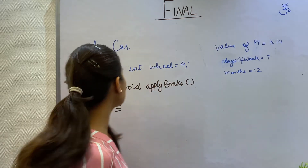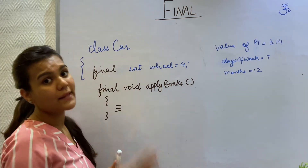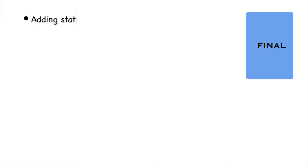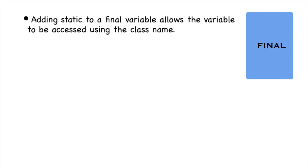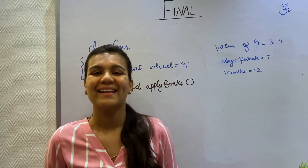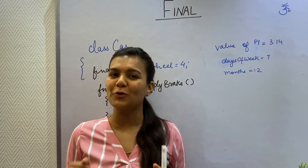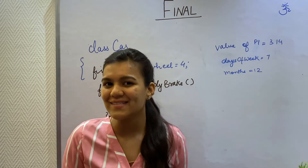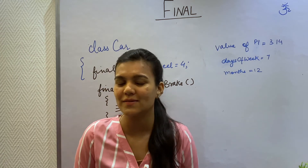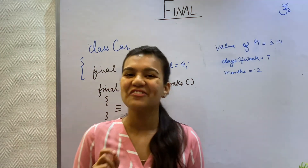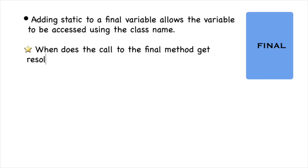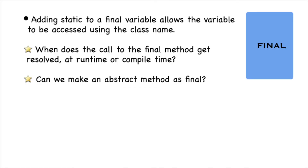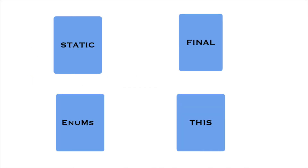If I add a static keyword along with my final keyword, then I can use this property with the class name and I don't have to have an instance to access my wheel property. I have two bonus questions. First: when does the call to the final method get resolved — at runtime or at compile time? Second: can I make my abstract method final? Please put your answers in the comment box. This brings us to the end of the final keyword.